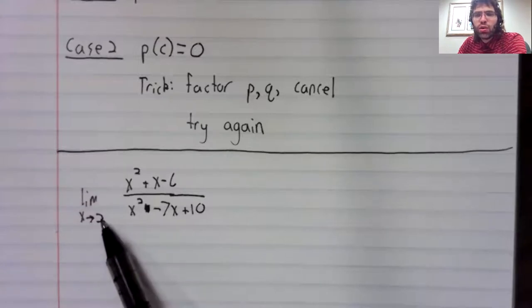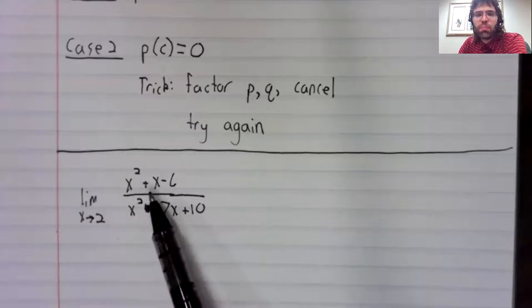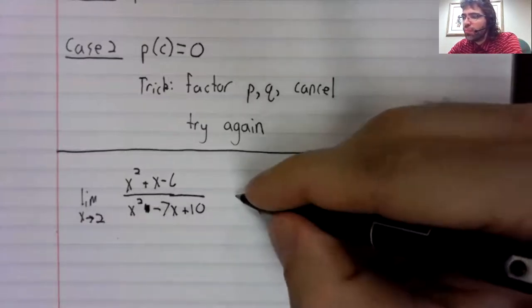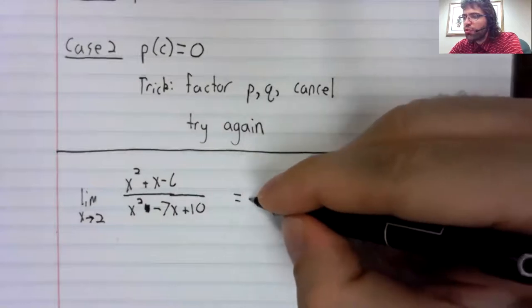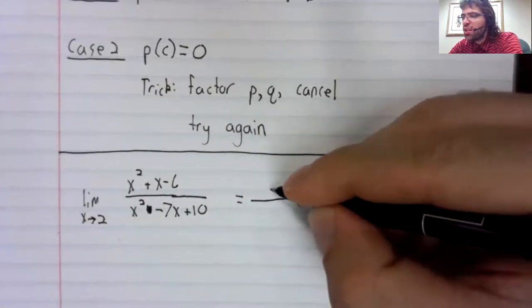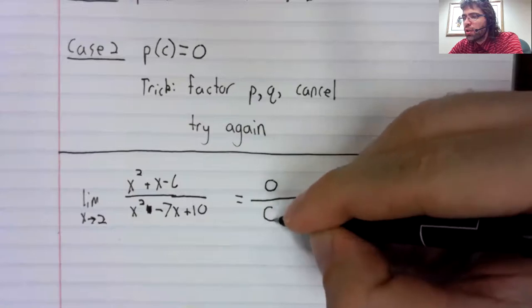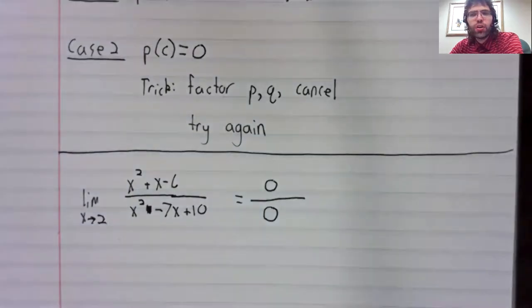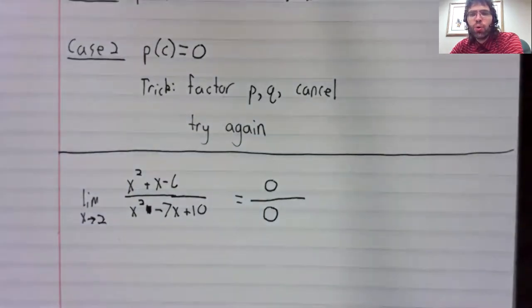We can take the limit of a rational function ordinarily just by plugging this number in. But if we try that here, the numerator and the denominator both turn to zero.